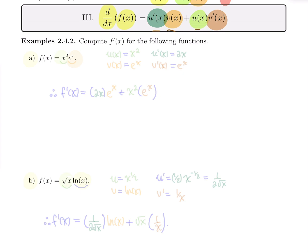The key, if you have a harder time computing these things, is just to see that you have a product. Label your first equation u, label your second equation v. Compute u prime and v prime separately, typically using easier rules of differentiation. Then combine the four formulas — u, v, u prime, v prime — using the product rule formula.